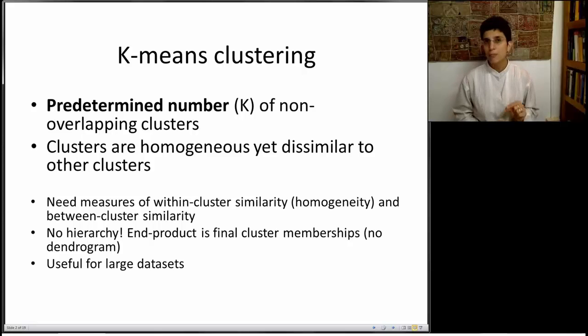Given that we set this number, we're going to try and create clusters that are homogeneous as possible inside, but are as dissimilar to other clusters as possible. This is slightly different than in the case of hierarchical clustering. We're going to have to have some measures of within-cluster similarity, or homogeneity, as well as between-cluster similarity. We're going to try and minimize the within-cluster distances and maximize the between-cluster distances. There's going to be no hierarchy here, and at the end, what we'll get is we'll have labels each record which cluster it belongs to. What's nice about this method is that it scales beautifully to very large datasets, and that's why this is again in use in many applications.